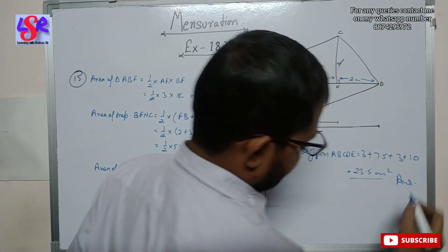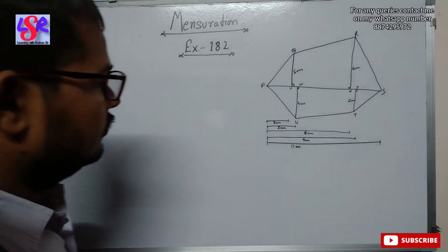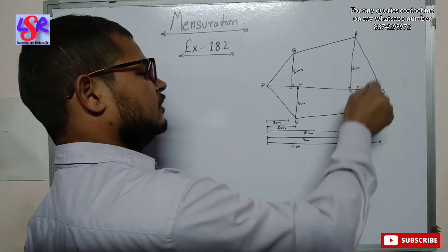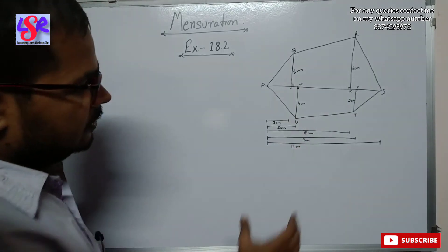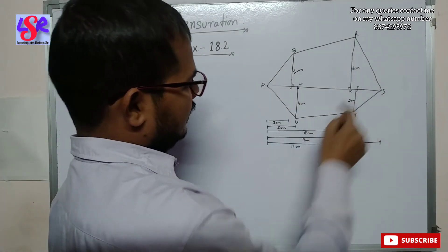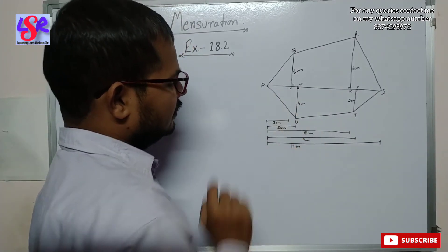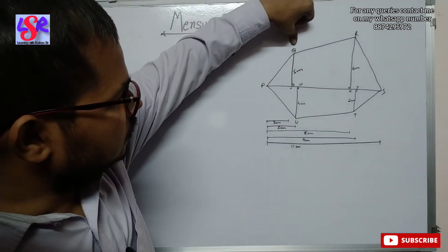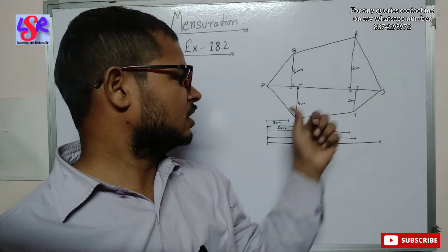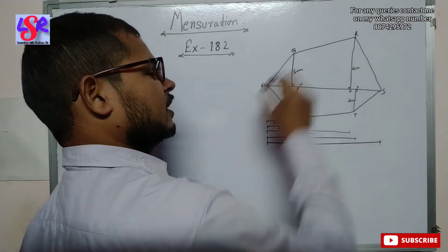Now let us move to question number 16. We have a polygon divided into 4 triangles and 2 trapezoids. The given lengths are: PS is 11 centimeters, PY is 9 centimeters, PX is 8 centimeters, PW is 5 centimeters, and PV is 3 centimeters. The heights given are: QV is 5 centimeters, RX is 6 centimeters, YT is 2 centimeters, and UW is 4 centimeters.